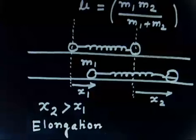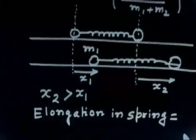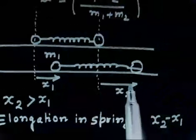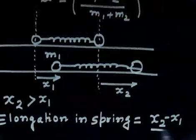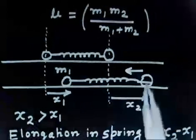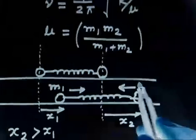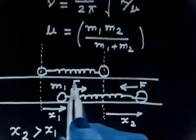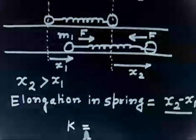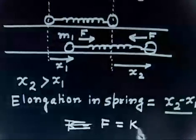The elongation in the spring equals x2 minus x1 — since x2 is greater, the spring is elongated. This spring will try to pull both sides back. The force acting on m1 is in the positive direction and the force on m2 is in the negative direction. The spring force is given by k times (x2 − x1).